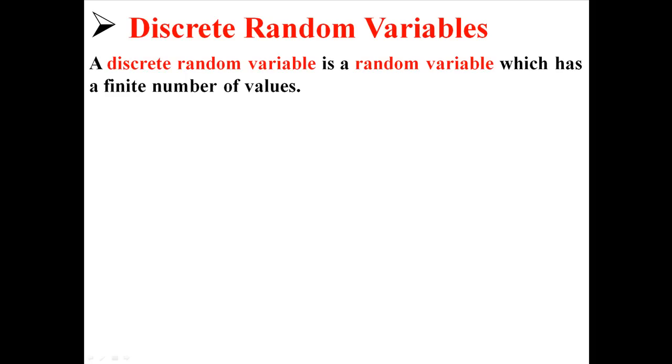So now one kind of random variable is a discrete random variable. A discrete random variable is a random variable with a finite number of values.